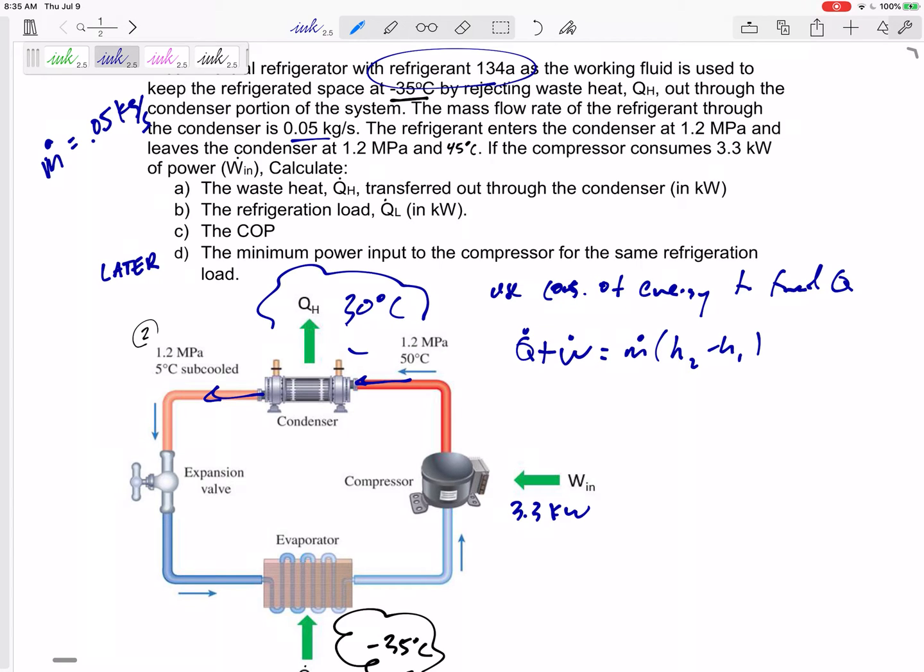Remember, go back to steady flow devices. Sometimes you have kinetic energy when we're worried about velocities, but we're not worried about the velocity of the refrigerant. Sometimes potential energy if we have large changes in height, those are going to be negligible. So conservation of energy really just boils down to Q plus W equals M delta H.